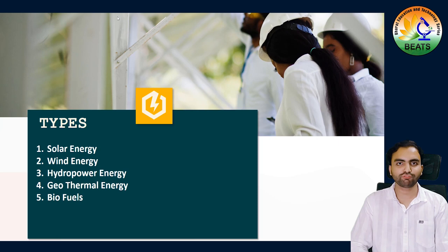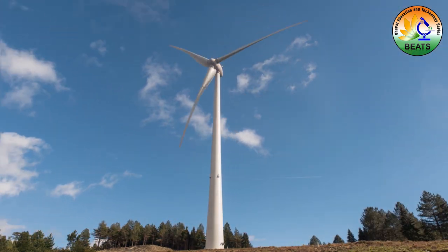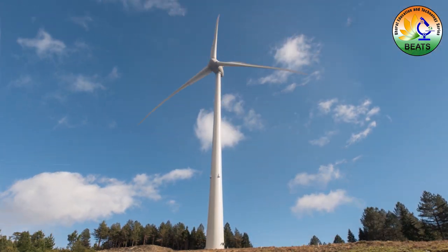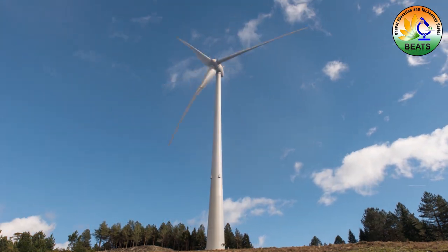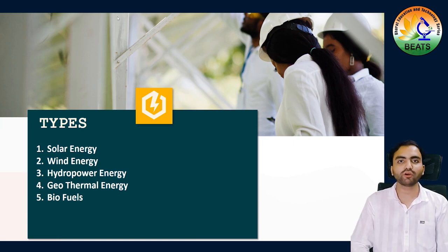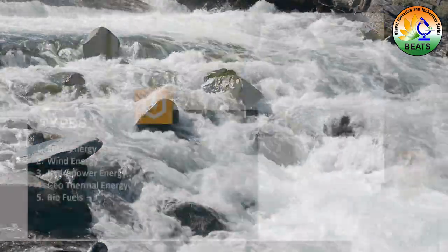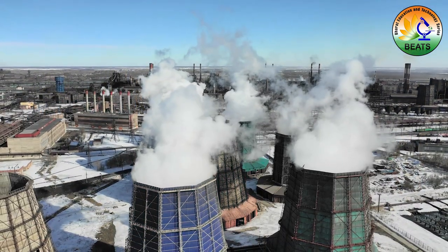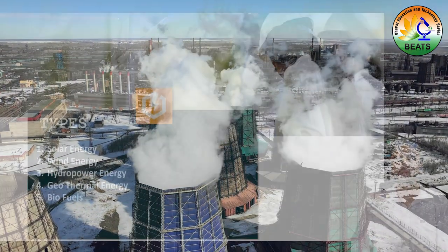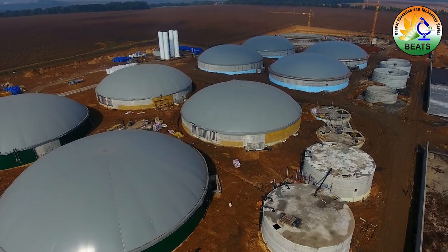Let's move on with the types of green energy. First, solar energy — the best example is solar panels. Next, wind energy, which we can convert to electricity. Next, hydropower energy, generated from water flow and speed. Next, geothermal energy and biofuels. So these are the few types of green energy.